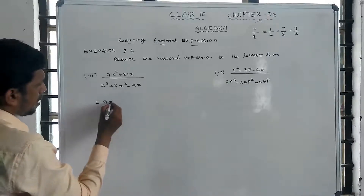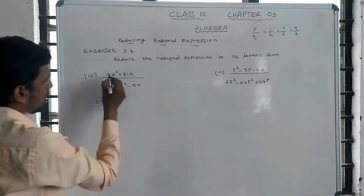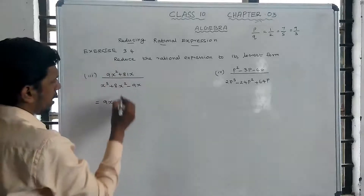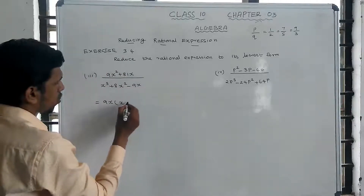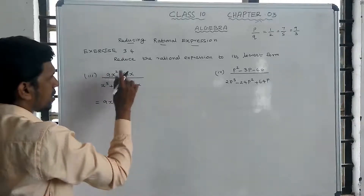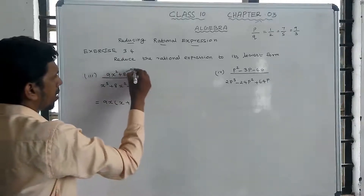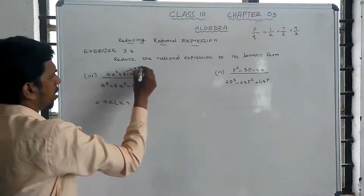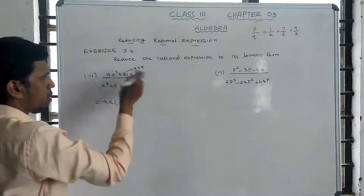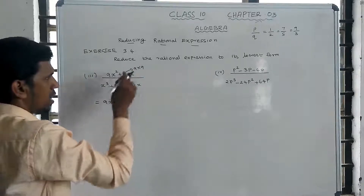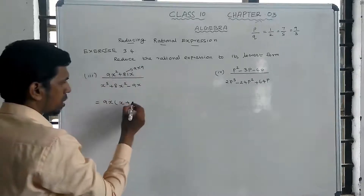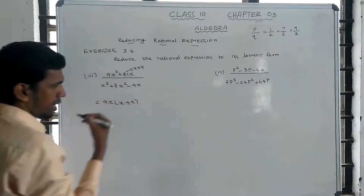So we factor out 9x from the numerator: 9x squared plus 81x becomes 9x times x plus 9.